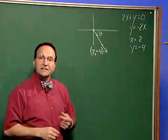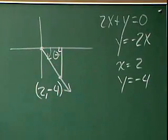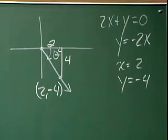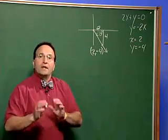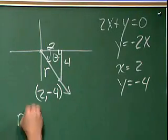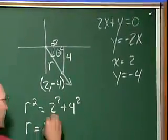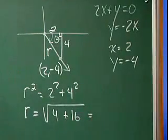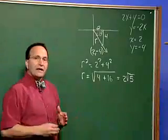Well, if that's the case, then I can draw a triangle by dropping this perpendicular, and I now know that this would be equal to 2, and that length would be equal to 4. So that when I want to find r, I can use the Pythagorean theorem to say that the hypotenuse squared, r squared, is equal to 2 squared plus 4 squared. So r is the square root of 4 plus 16, which is the square root of 20, which gives me 2 square roots of 5.